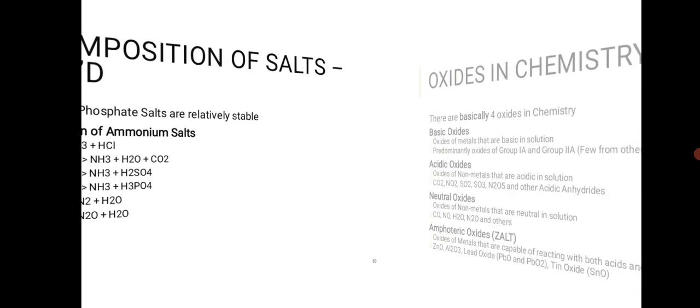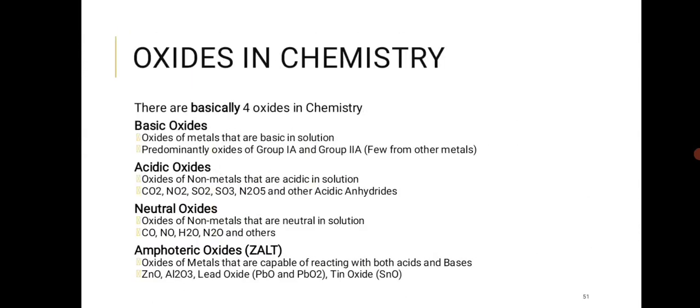Oxides in chemistry can be remembered using the acronym BANE: Basic, Acidic, Neutral, and Amphoteric. Basic oxides are oxides of metals — mainly Group 1 and Group 2 metals, though some transition metals also form them. Acidic oxides are oxides of non-metals, such as CO2, NO2, SO2, SO3, N2O5, and P2O5/P4O10.